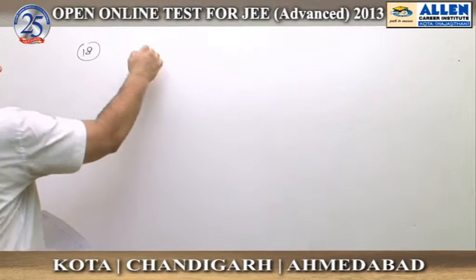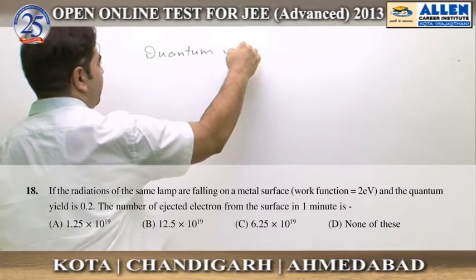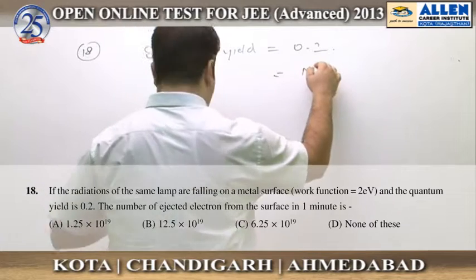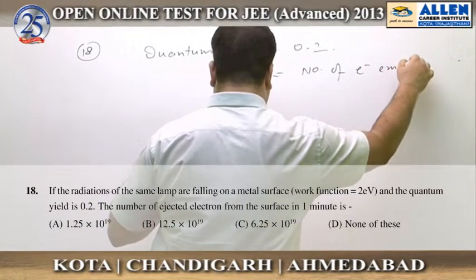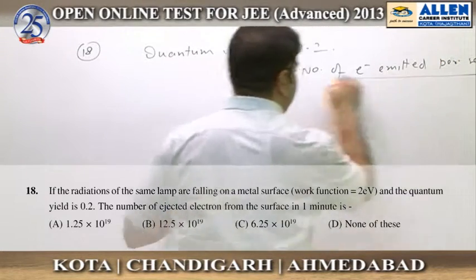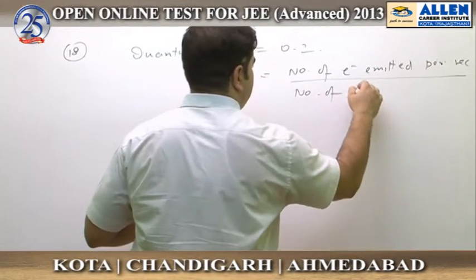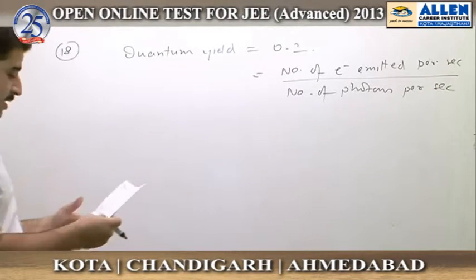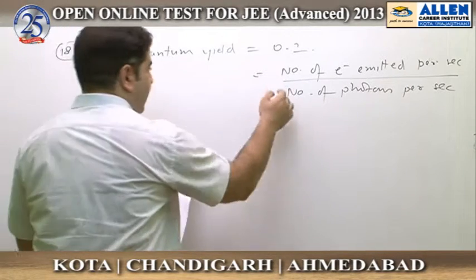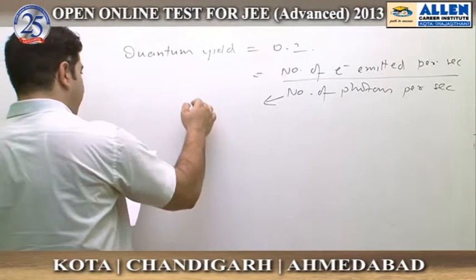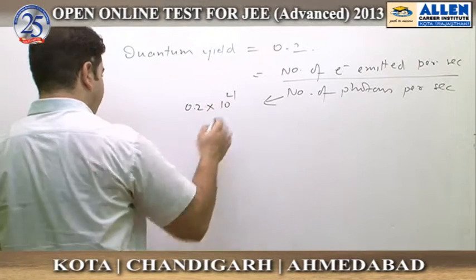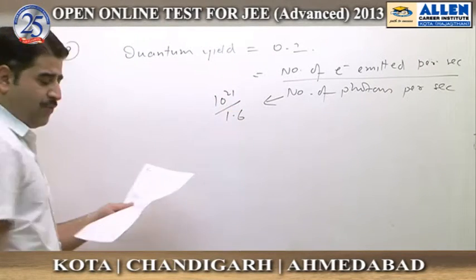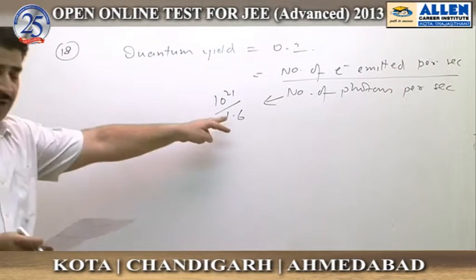In question number 18, the quantum yield for the reaction is equal to 0.2. Quantum yield is defined as the number of electrons emitted per second divided by the number of photons used per second. The number of electrons emitted per second is 0.2 × 10²¹ divided by 1.6, using the same photon count calculated in question number 17.